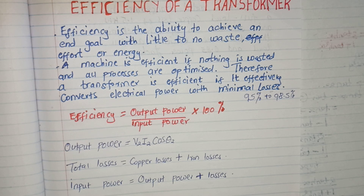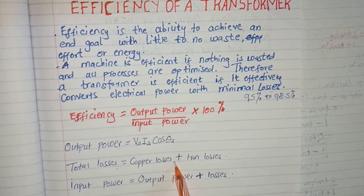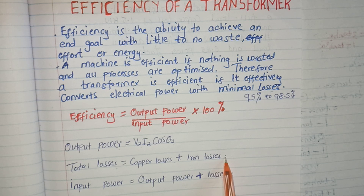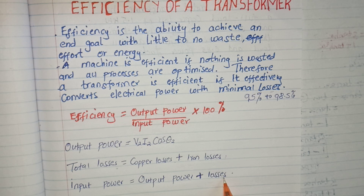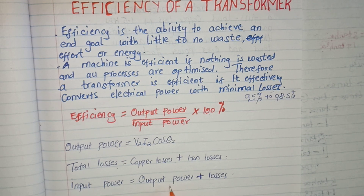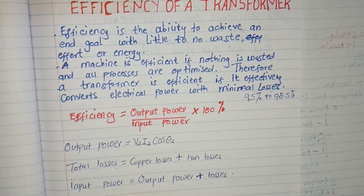As stated, a transformer will have some losses. The total losses in the transformer equal all the copper losses plus all the iron losses. The input power supplied to the transformer is given by the output power plus all the losses in the transformer. So: input power = output power + total losses. After knowing all these parameters, let's look at an example of how we calculate the efficiency of a transformer.